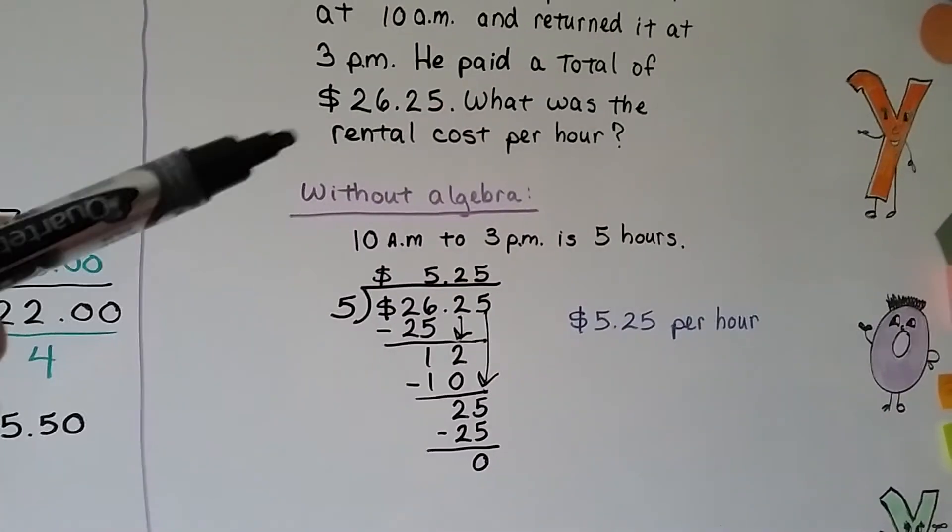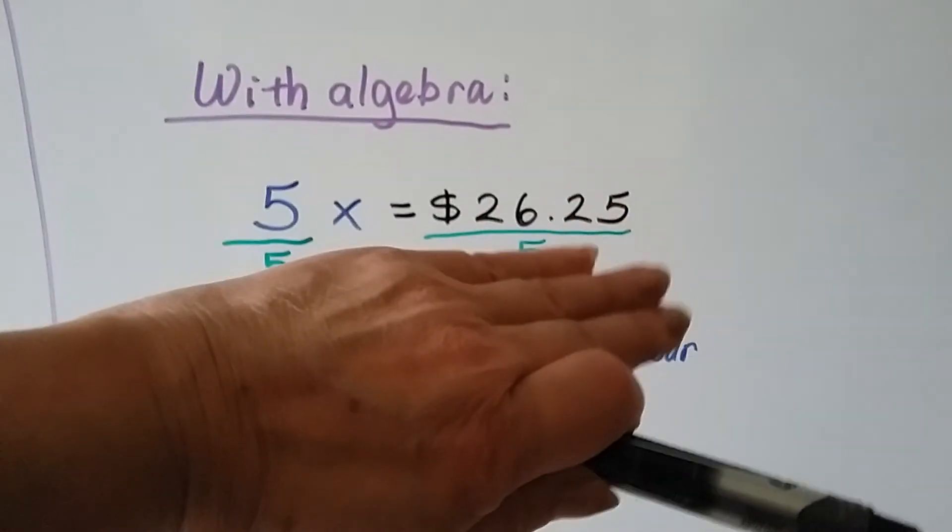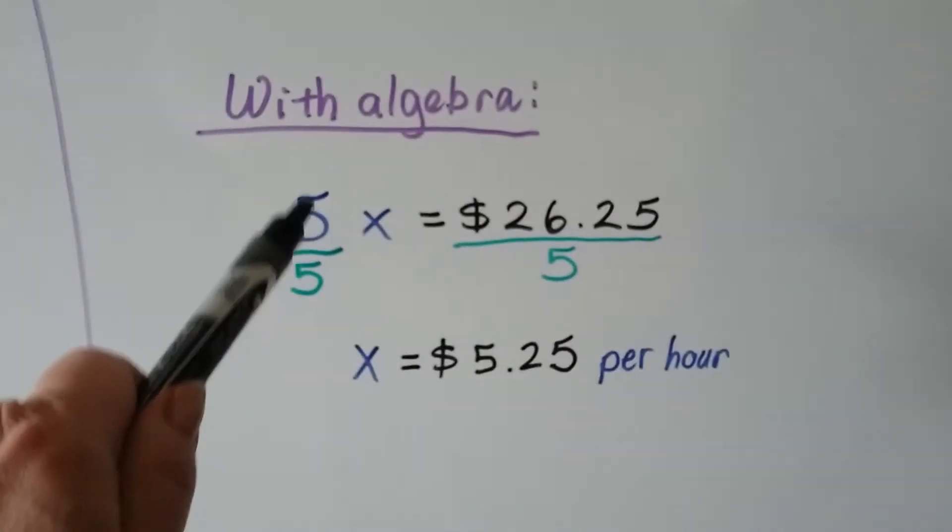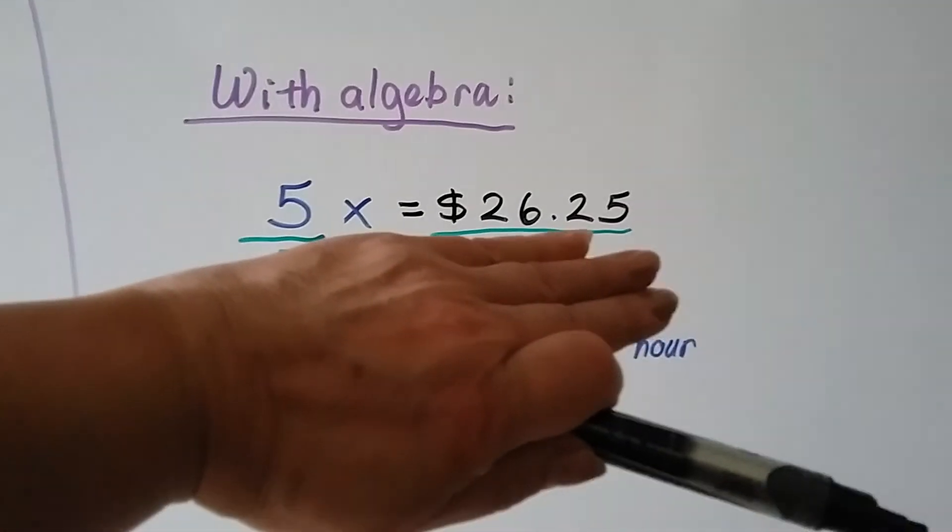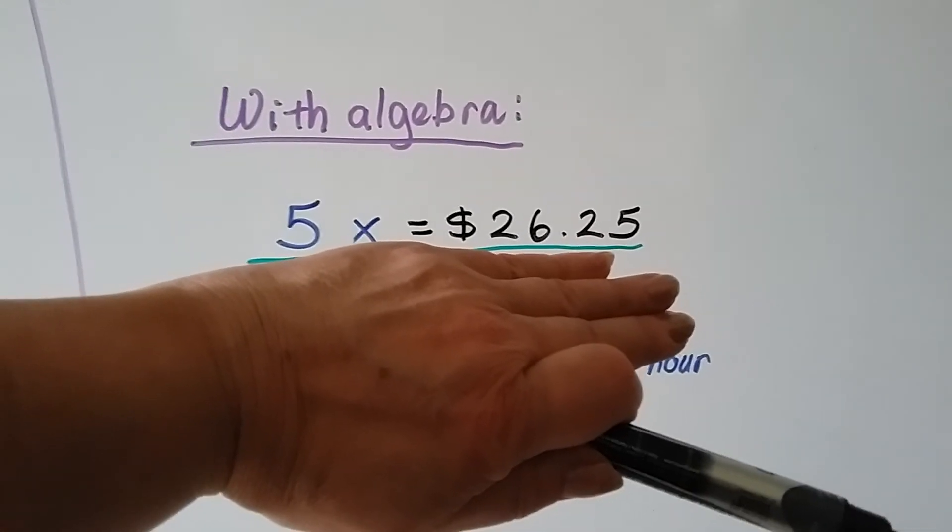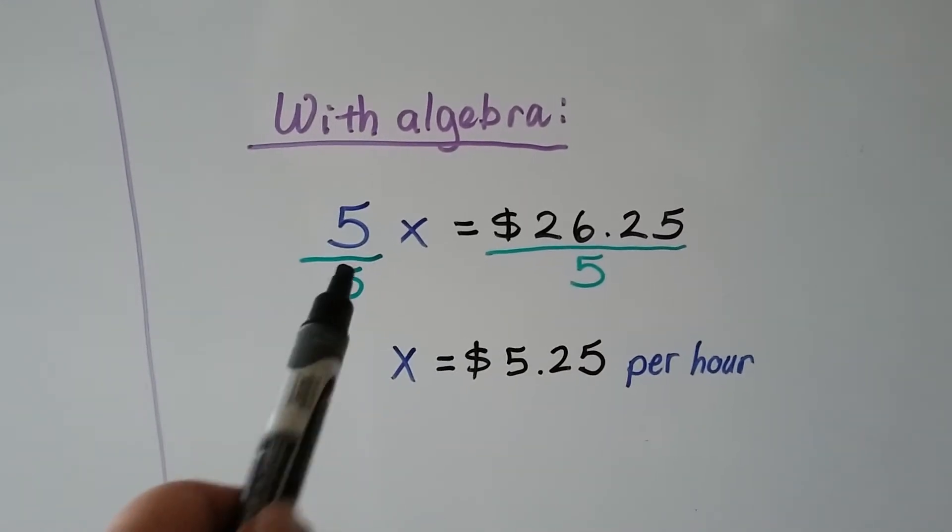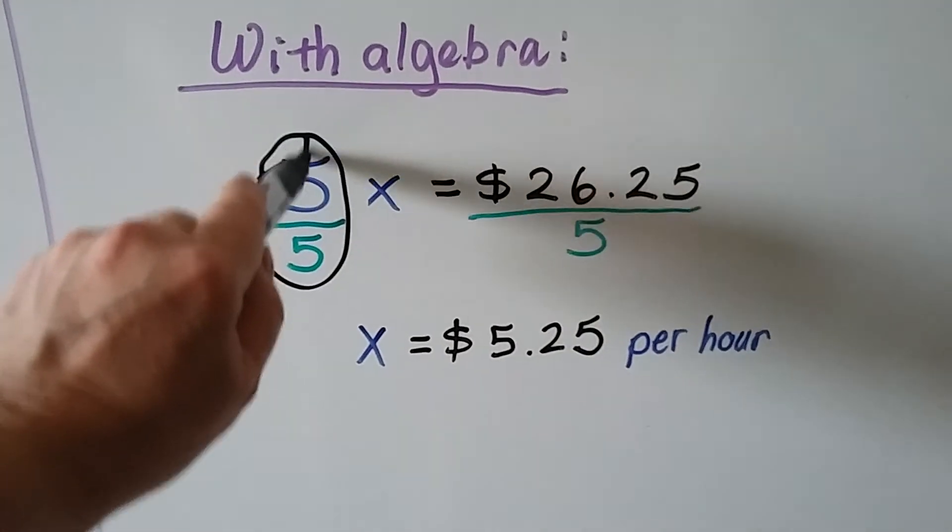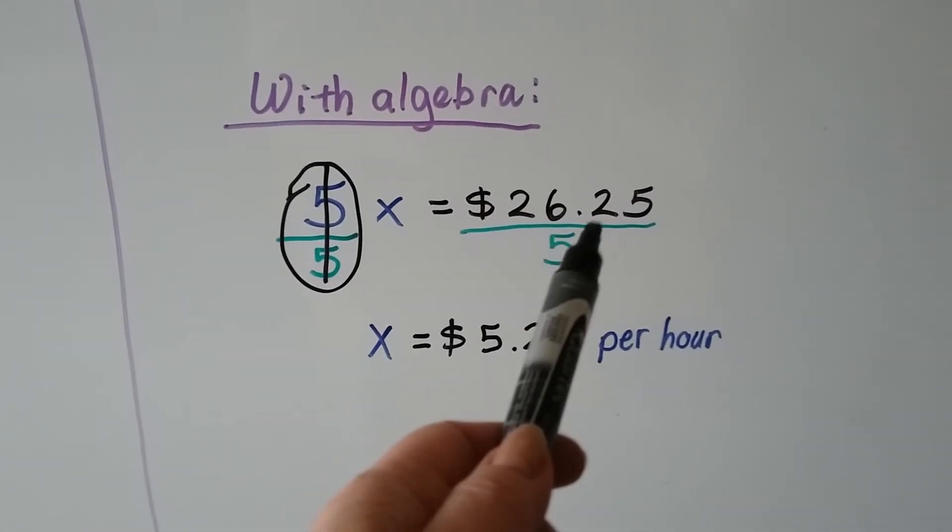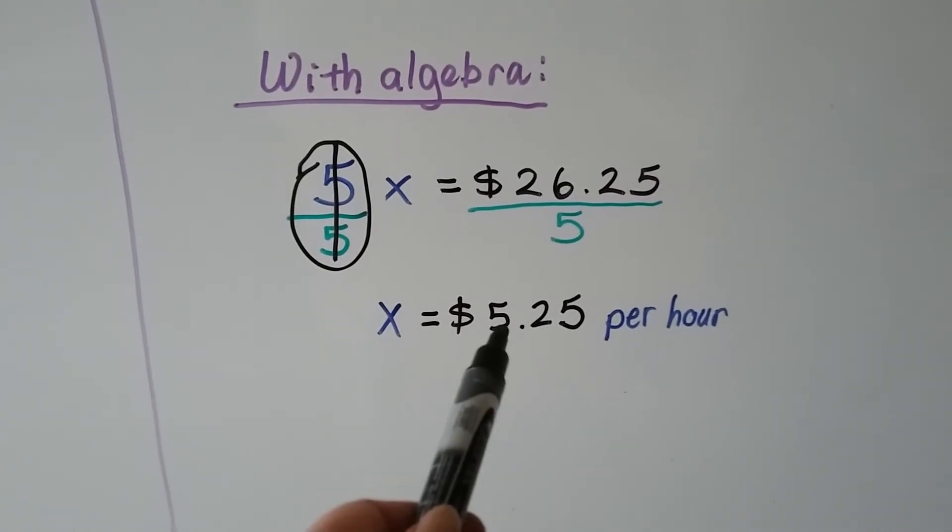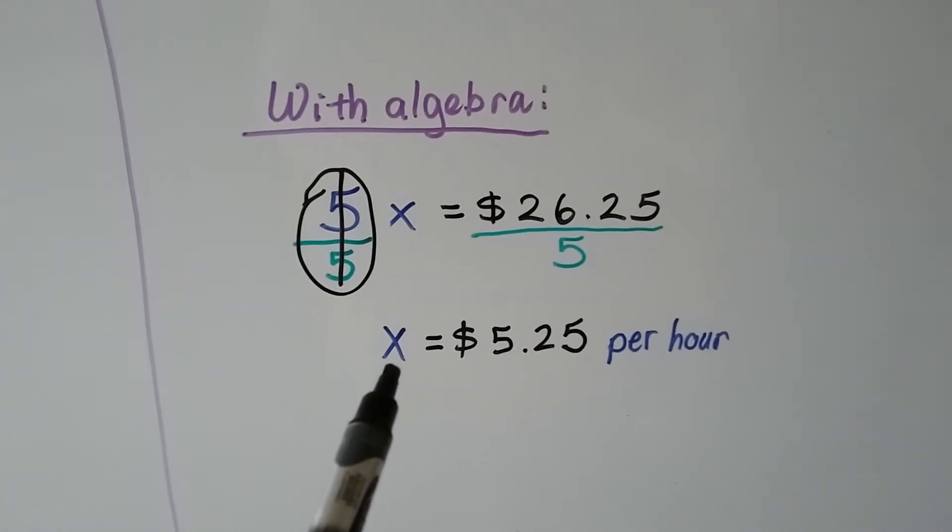Now, if we wanted to do this problem with algebra, and if you're using a calculator, we would write 5x for the 5 hours. We don't know what the cost per hour is, so that's going to be our x equal to $26.25. So all we have to do is divide both sides of the equal sign by a 5. That's going to make our invisible 1, because 5 fifths is equal to 1. $26.25 divided by 5 on the calculator comes out to 5.25, or $5.25 per hour. We know that's what x equals.